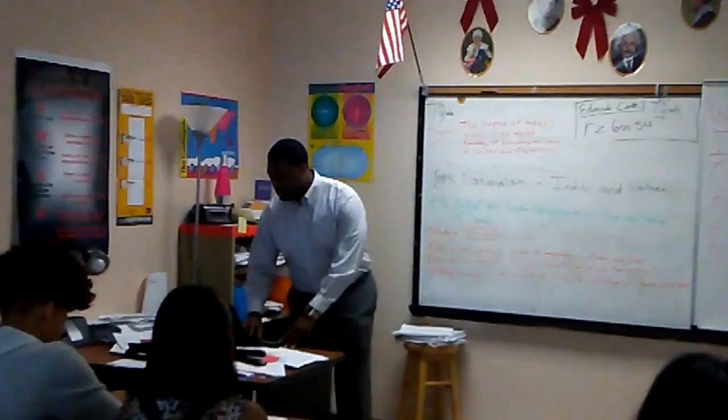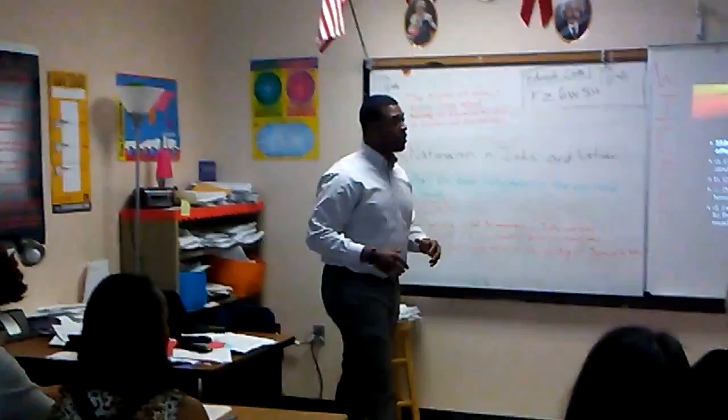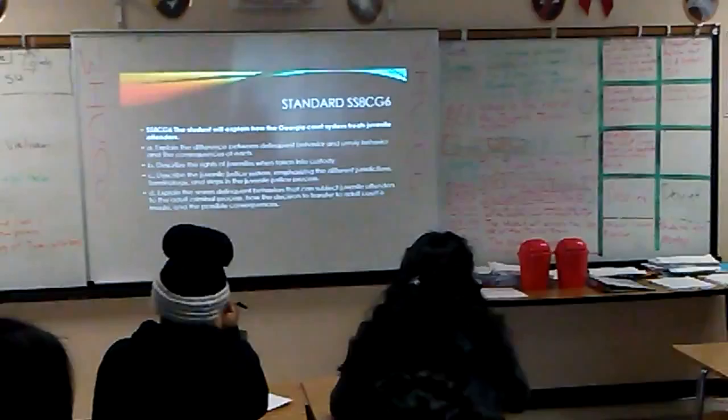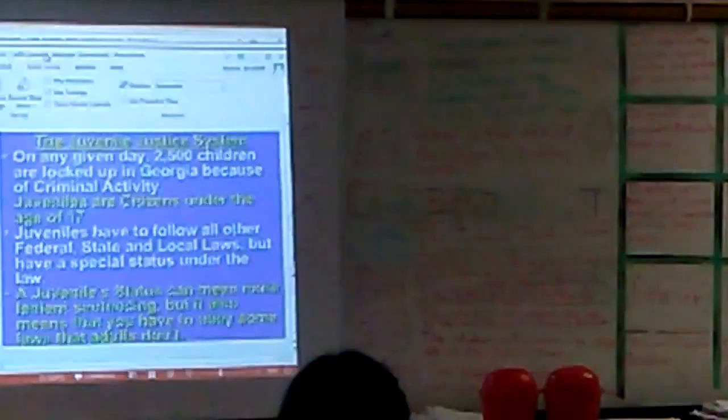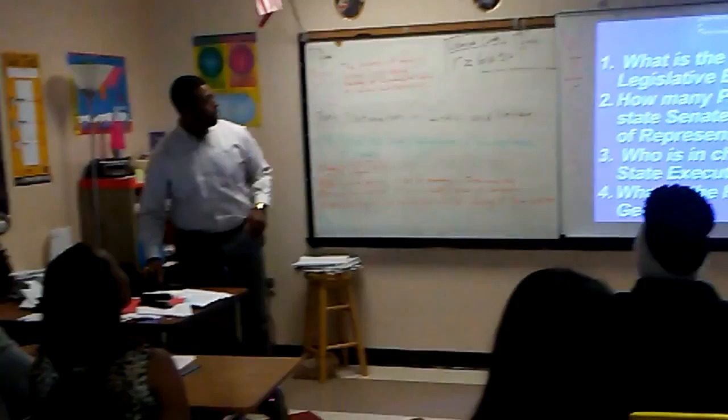And D, explain the seven delinquent behaviors that can subject juvenile offenders to the adult criminal process, how the decision to transfer to adult court is made, and the possible consequences. So everybody already has their Cornell notes. Please be sure to make your different connections as you take these Cornell notes. By the end of this lesson, I want you to answer that essential question.